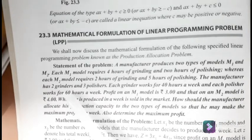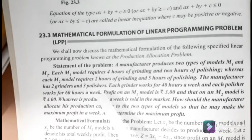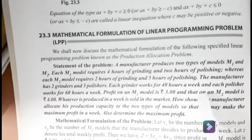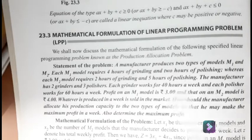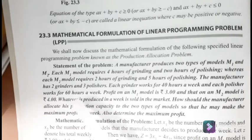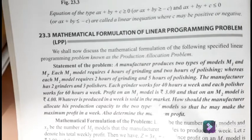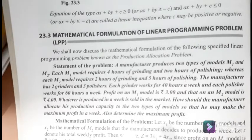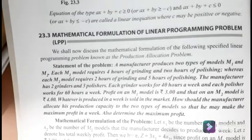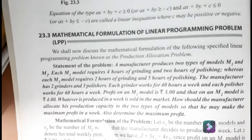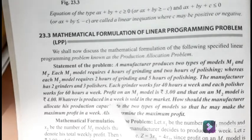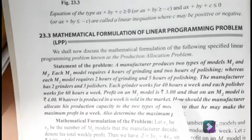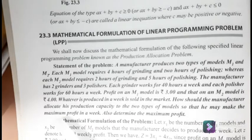The manufacturer has 2 grinders and 3 polishers. Each grinder works for 40 hours a week and each polisher works for 60 hours a week — meaning the maximum a grinder works is 40 hours per week. The profit on model M1 is rupees 3 and on M2 is rupees 4.